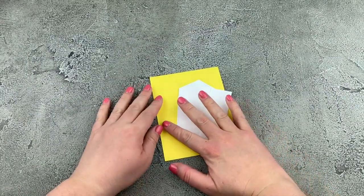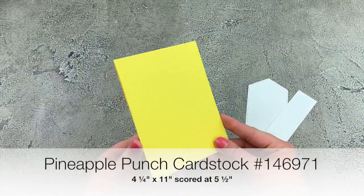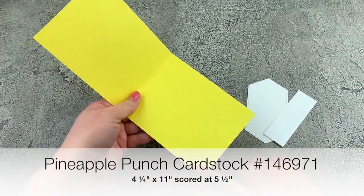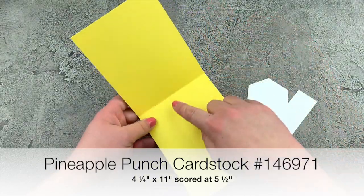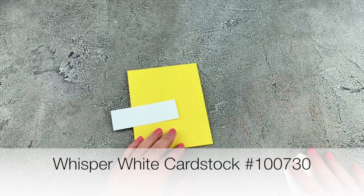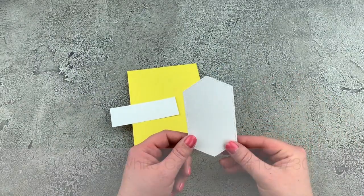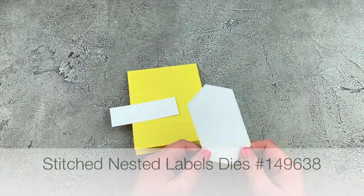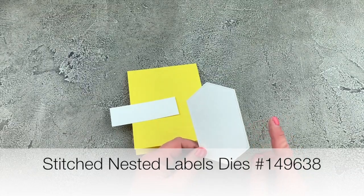So here are the pieces for our second card. I've got a pineapple punch card base. And this is four and a quarter by 11 scored at five and a half. I've got a scrap of my whisper white cardstock. And then I also have a piece of whisper white cardstock that I've die cut with the stitched nested labels.